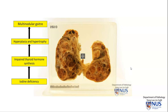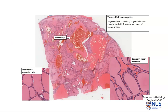Microscopically, we would see multiple nodules. You can see that there is a vague nodule here that is not encapsulated. Within each nodule, we will see multiple follicles. Some of the follicles are very large and contain abundant colloid. Other follicles are smaller, and the lining epithelium can be cuboidal, as we see here, or it can also be a little bit more hyperplastic, meaning that the cells are more columnar.